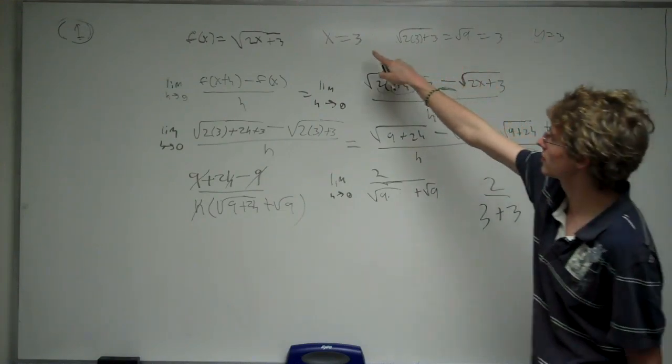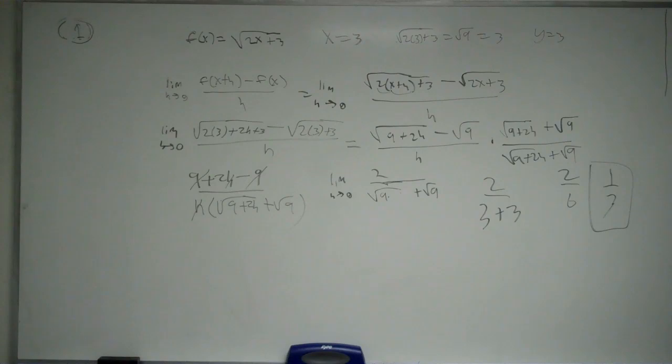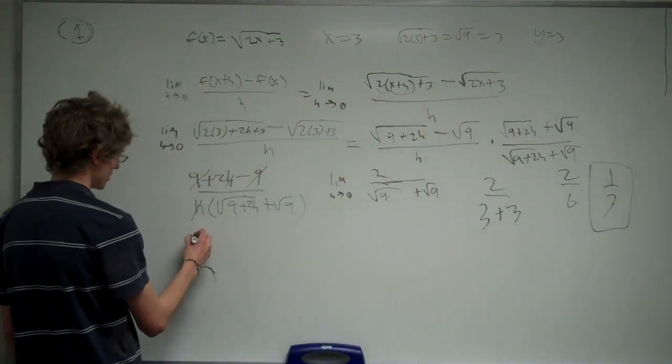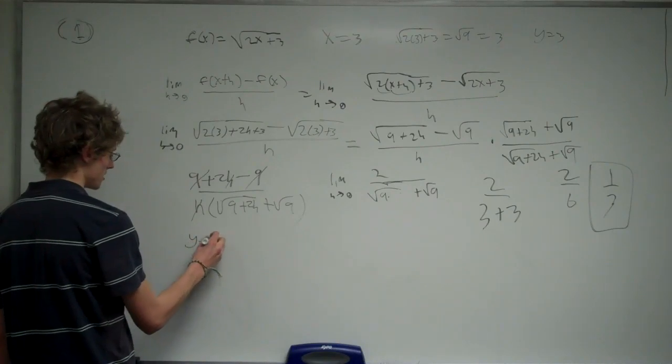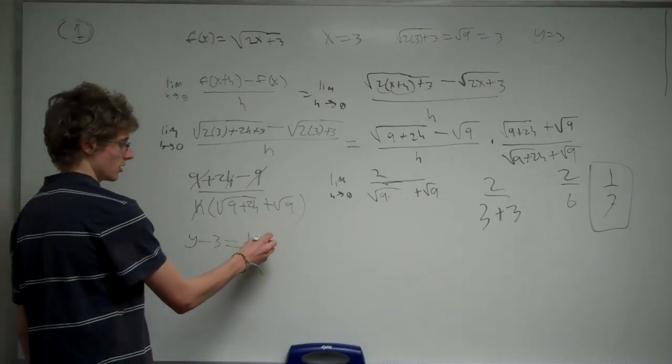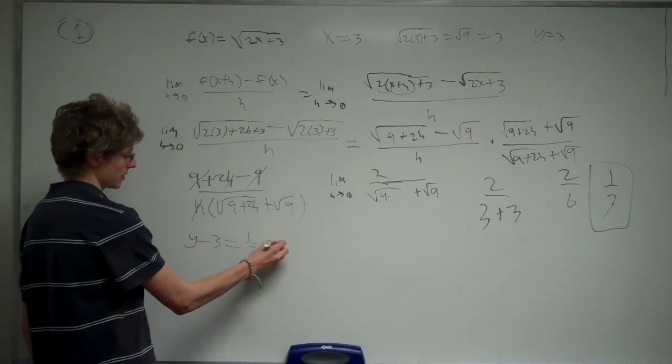So we've got a point at 3, 3, and a slope of 1 third. So we can write an equation of a line in point-slope form, so y minus 3 equals 1 third times x minus 3.